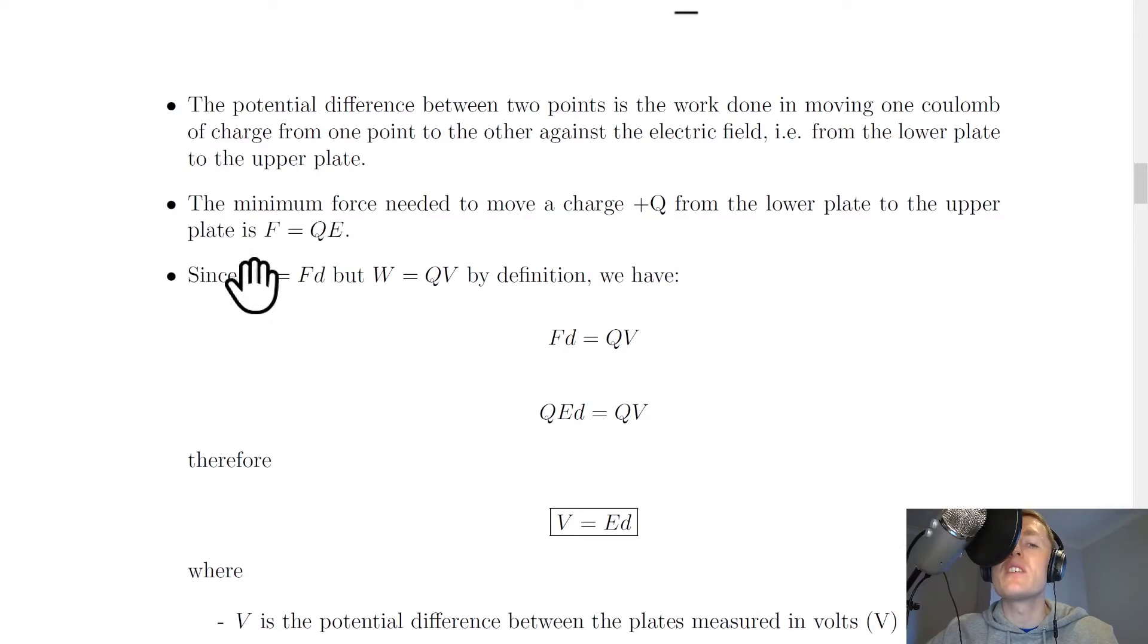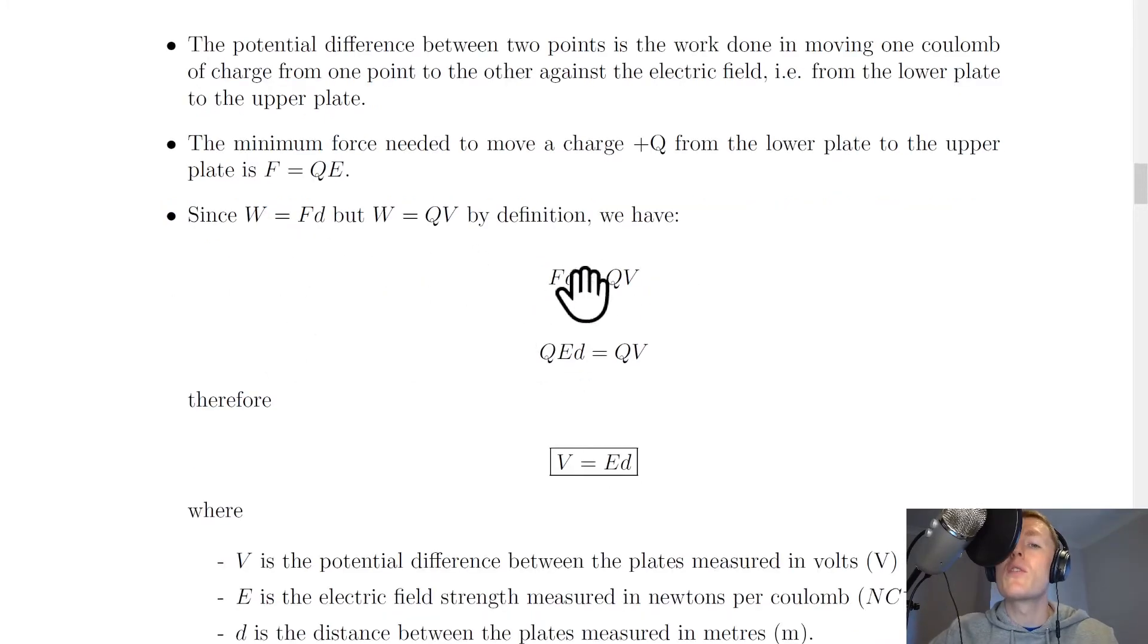Since work done is equal to the force times distance w equals fd, but w equals qv, then by definition we have two expressions for work done and we can equate them. So we've got fd equals qv, or subbing in our expression for f in terms of the electric field strength, we've got qed equals qv, because f equals qe.